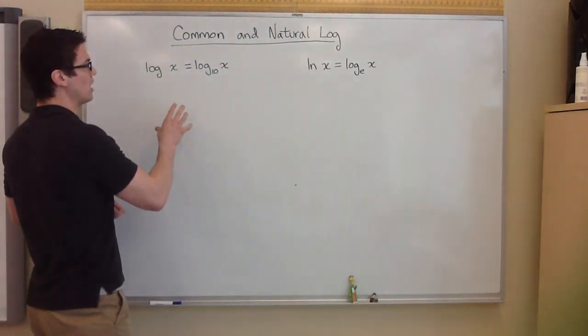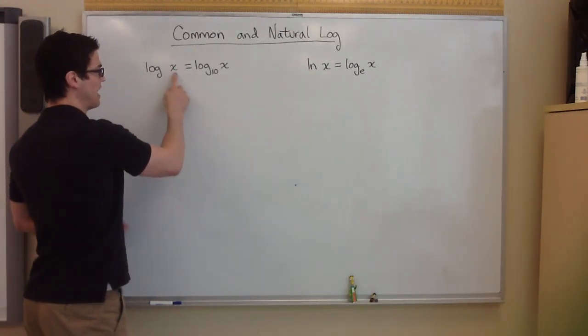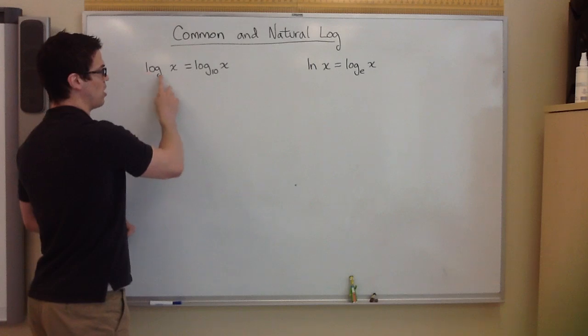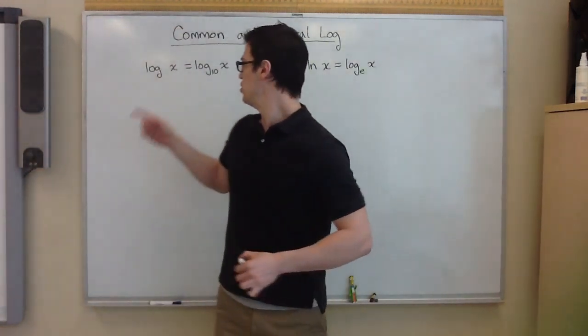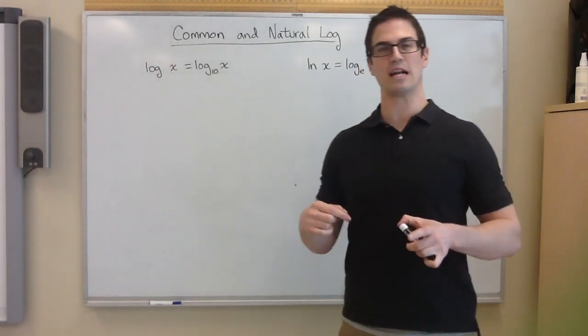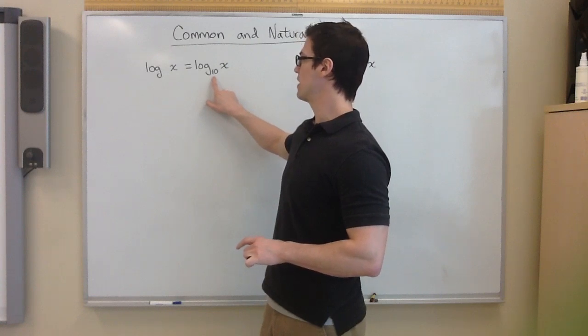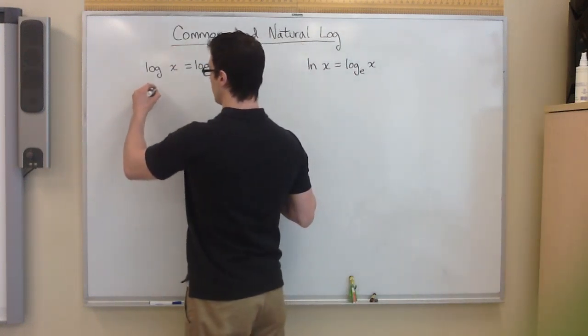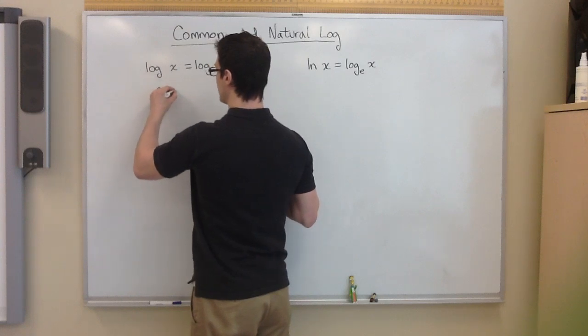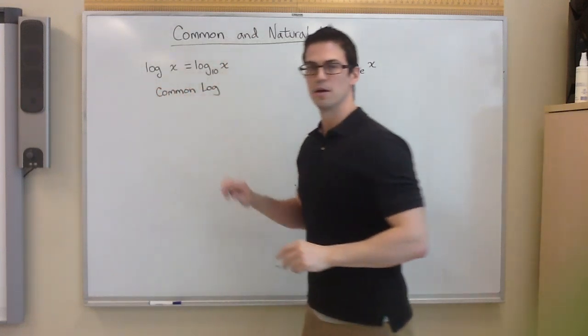So common log, you might see a problem that says log of x, but there's no base. Usually it's like log base 2 of x or something like that. There's always a little number here. But if you ever see it where there's no number, it's just assumed to be 10. This is the common log. Common log just has a base of 10.